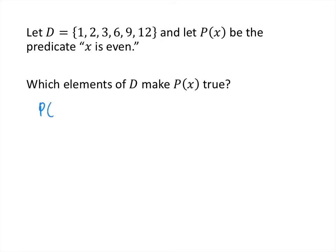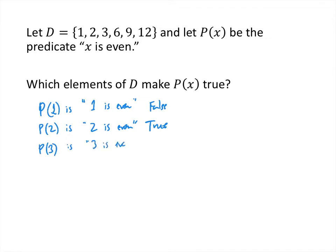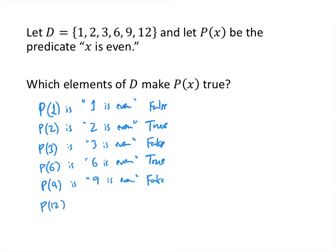P of 1 represents the statement '1 is even,' which is false — 1 is not even. P of 2 is '2 is even,' which is true. P of 3 means '3 is even,' which is false. P of 6 is '6 is even,' which is true. P of 9 is '9 is even,' which is false. And P of 12 is '12 is even,' which is true. So the list of numbers that makes the statement true are 2, 6, and 12.